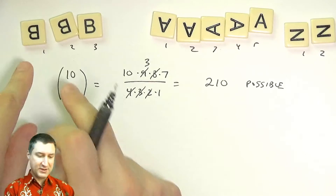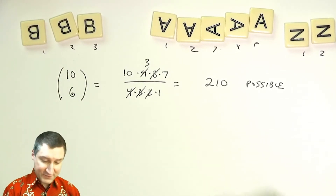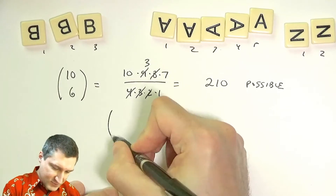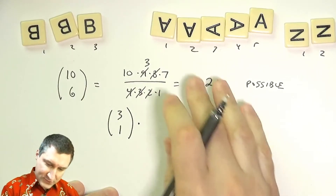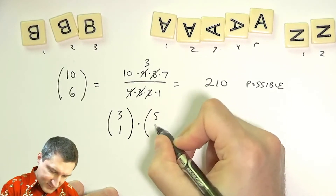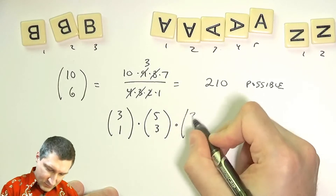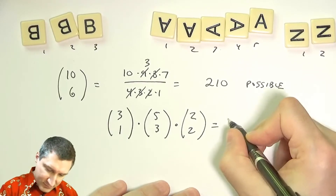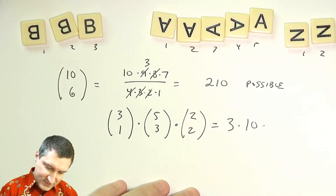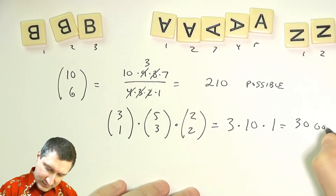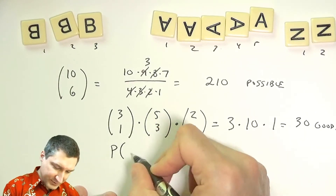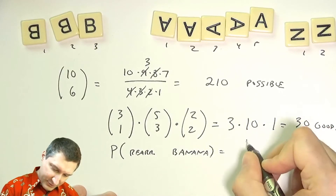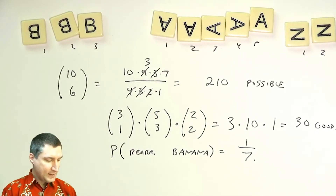Now I count the good outcomes. I need to choose one of the three B's: that's 3 choose 1 = 3 ways. I need three of the five A's: 5 choose 3 = 10 ways. I need both N's: 2 choose 2 = 1 way. So the number of good outcomes is 3 × 10 × 1 = 30. The probability of being able to rearrange to spell 'banana' is 30/210 = 1/7.